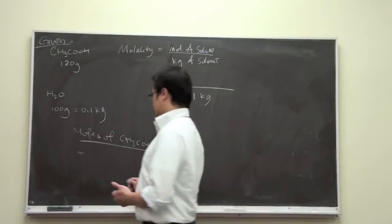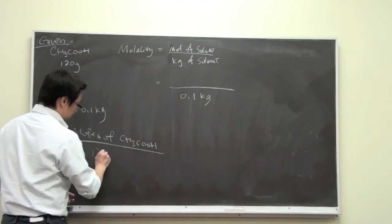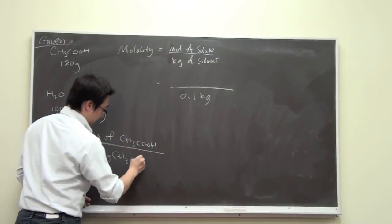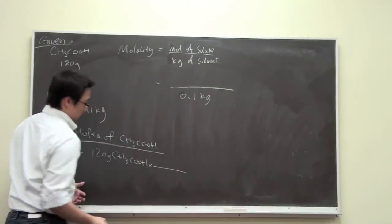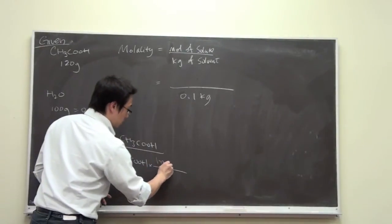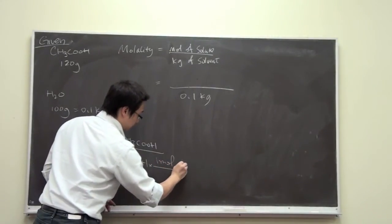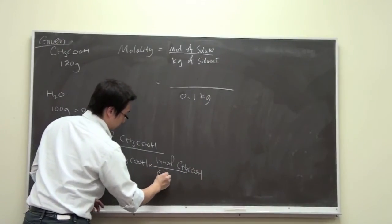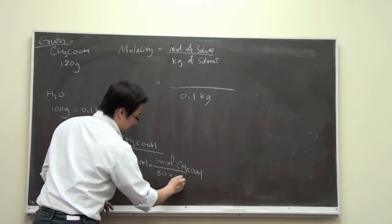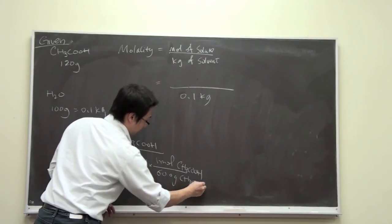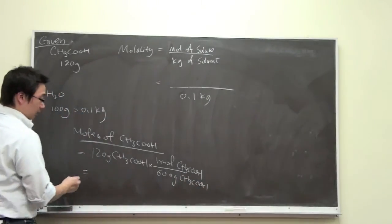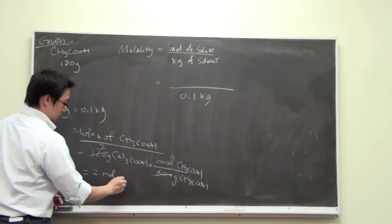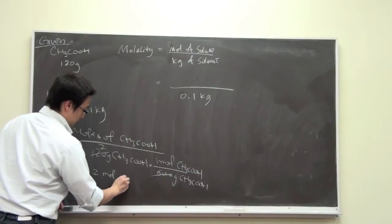So we have 120 grams. This is a very simple calculation that you don't even need your calculator. We have one mole of acetic acid is equal to 60 grams of acetic acid. So that would give me two moles of acetic acid.